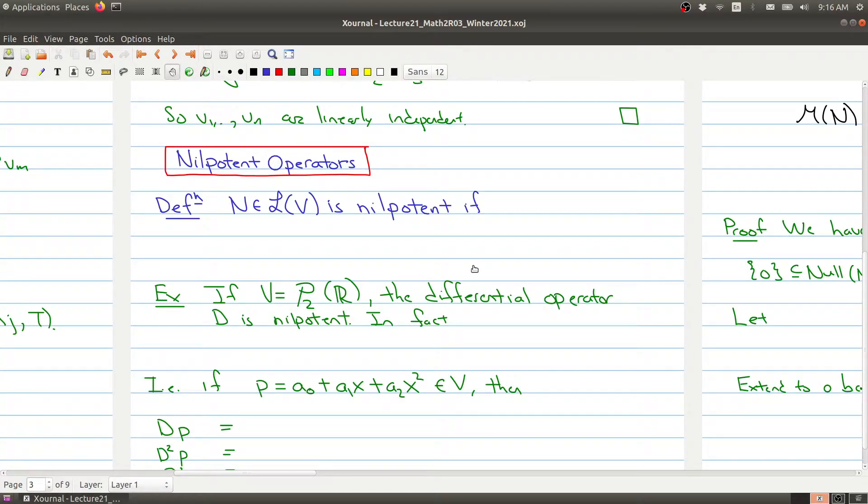Welcome back to part 2 of lecture 20 for Math 2R03. We're going to switch gears a little bit and talk about a special type of operator, and this is going to be a nilpotent operator. So an operator is a nilpotent operator if when you raise N to the power of L you get the zero operator for some integer L.